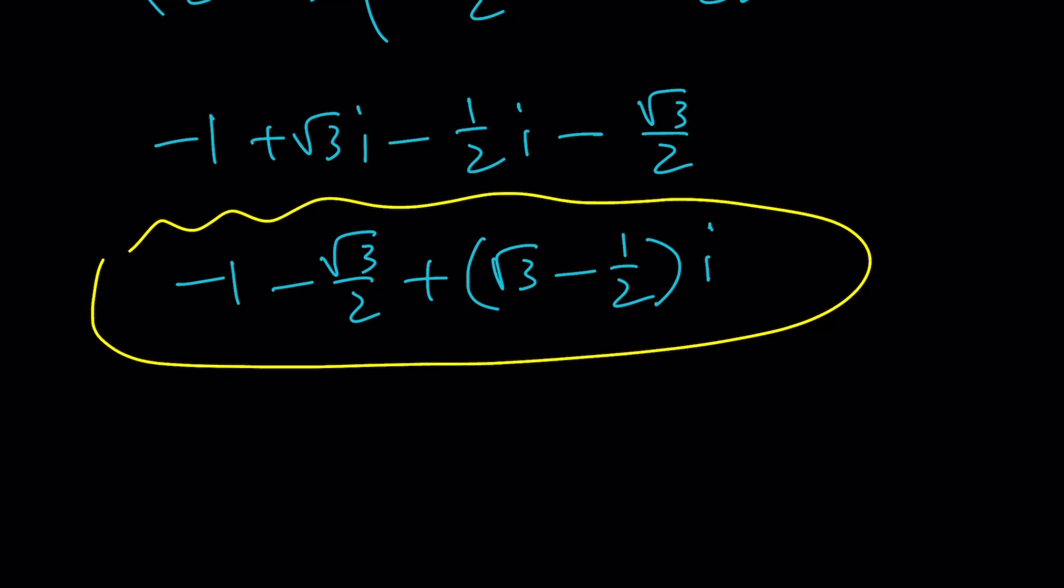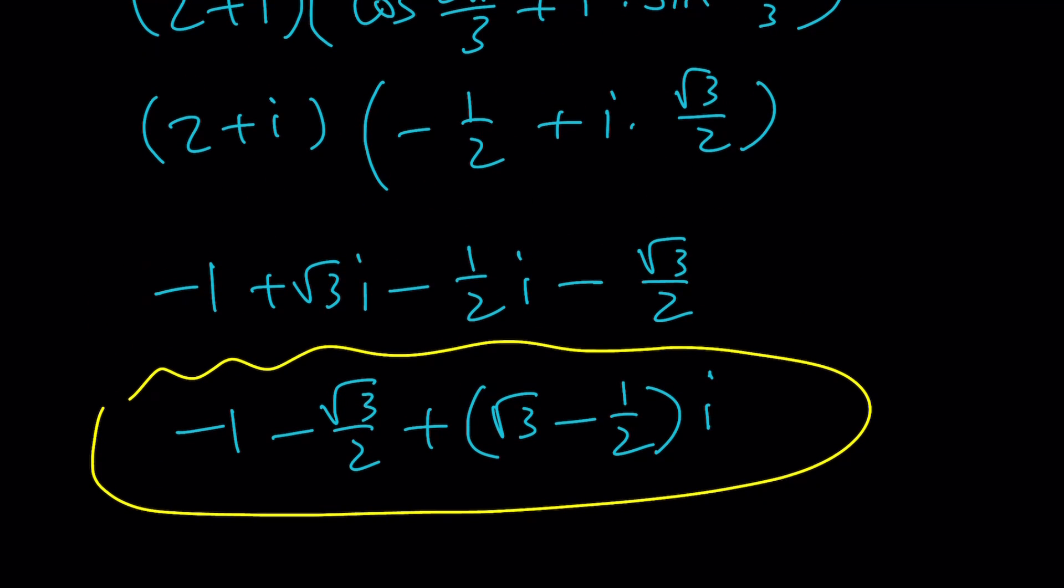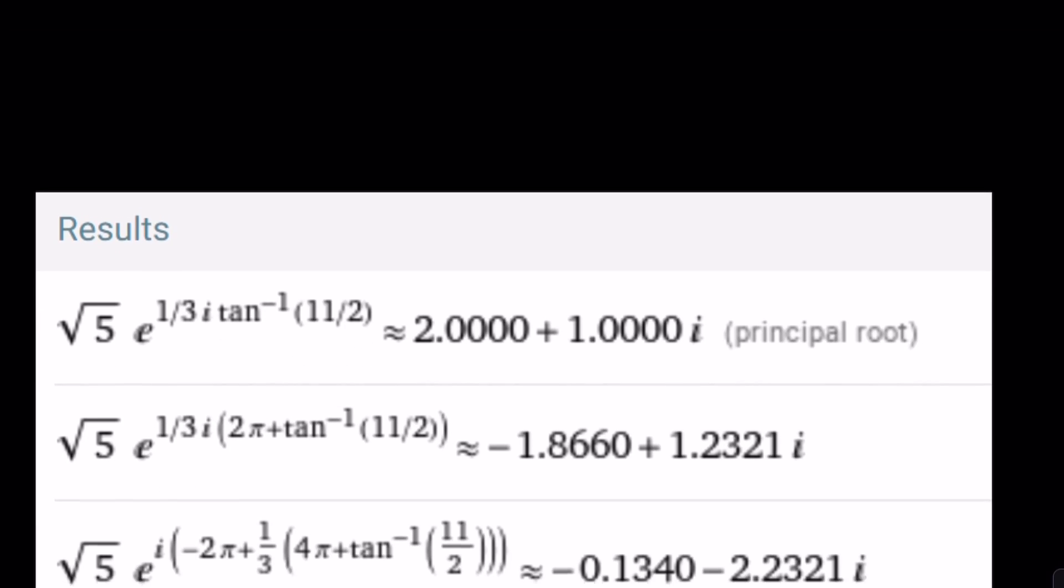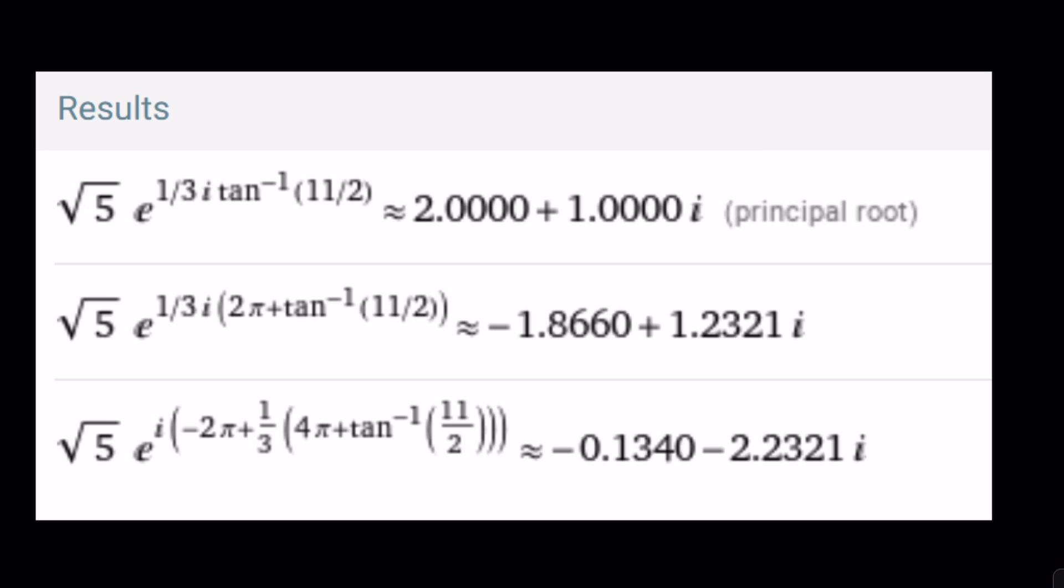And you can find the third one by following the same procedure with 4 pi i over 3. Kind of looks different. If you cube this number, is it really going to give you 2 plus 11i? You can test it out. And this brings us to the end of this video. Thank you for watching, I hope you enjoyed it. Please let me know, and don't forget to comment, like, and subscribe. I'll see you next time with another video. By the way, these are results from Wolfram Alpha. As you can see, the top one is approximately 2 plus 1i, which Wolfram Alpha calls the principal root. And this brings us to the end of the video. See you next time. Bye-bye.